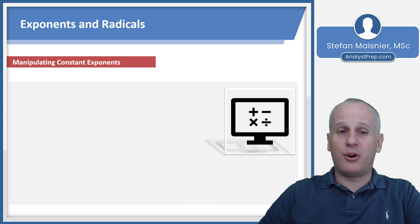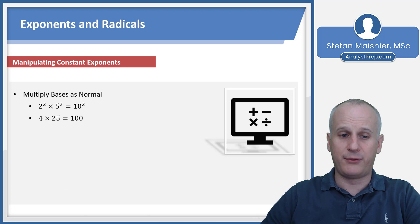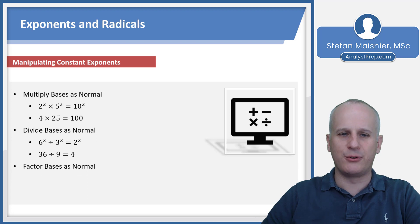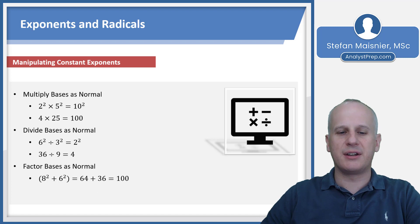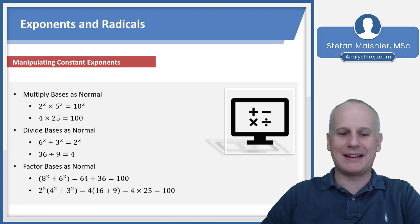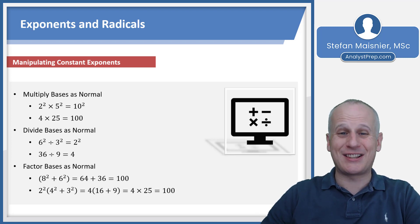When you have constant exponents, you can combine by multiplying your bases as normal. For instance, 2 squared times 5 squared — keeping the exponent constant — equals 10 squared. Proof: 4 times 25 is 100. You can also divide your bases: 6 squared divided by 3 squared equals 2 squared, and indeed 36 divided by 9 is 4. You can also factor bases as normal — 8 squared plus 6 squared equals 64 plus 36 equals 100. Factoring out 2 squared leaves 4 squared plus 3 squared, and 4 times 16 plus 9 equals 4 times 25, which is 100.